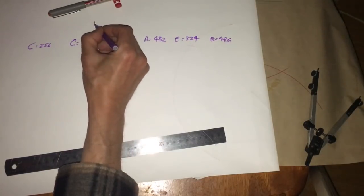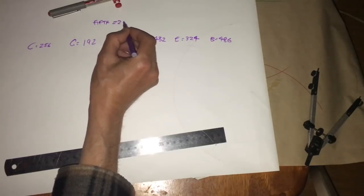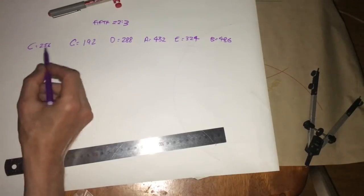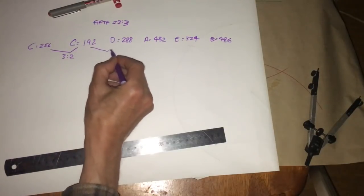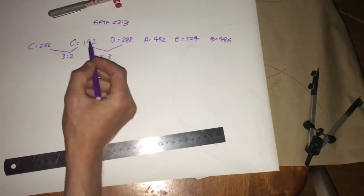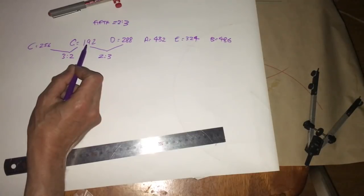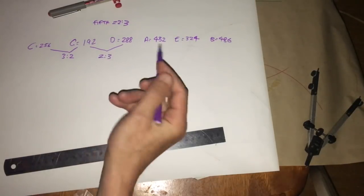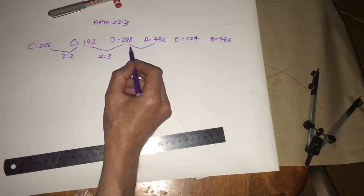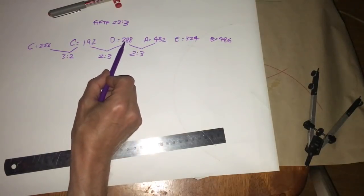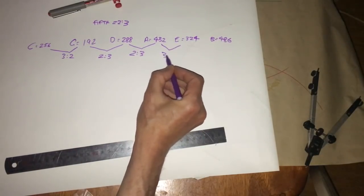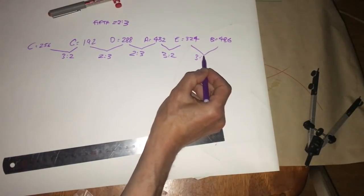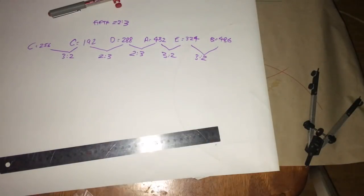We also have the perfect fifth, which is a 2 to 3 or 3 to 2 scale. So 256 to 192, that is a 3 to 2 scale. Then we have 192 to 288 is a 2 to 3. If I divide that by 2, I get 96, and I multiply 96 by 3, I get 288. All of them are at this 2 to 3, 3 to 2 scale.